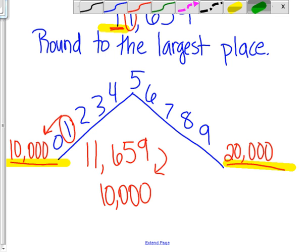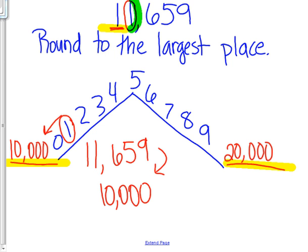The reason I use the circle tells me that circle there tells me to circle my number here and the circle rolls down the hill. So that's the reason I underline the number that I'm rounding. I circle the number that tells me what to do.